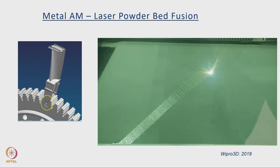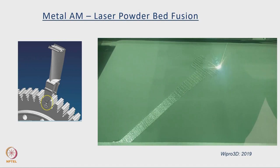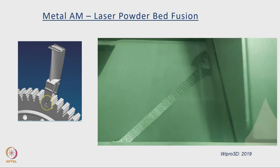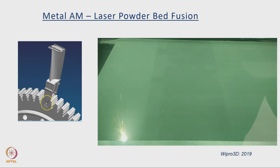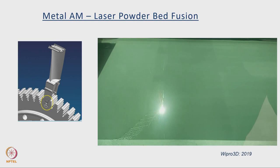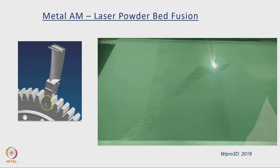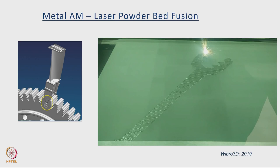A video demonstrates powder bed fusion of a turbine disc, showing the fir tree route responsible for fastening blades to the disc. The recoater supplies a fresh thin layer of material on the build platform, followed by the laser beam scanning a predetermined path. The periphery of the layer is drawn and the interiors are hatched in a specific way.